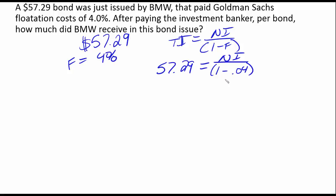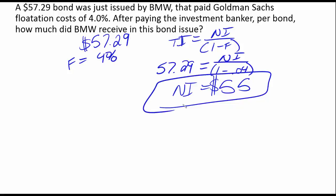We take our $57.29 and multiply that by 0.96. That tells us we have a net issue in the amount of $55. So BMW received $55 on this — that is the actual amount of cash that they are receiving.